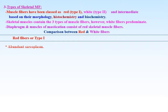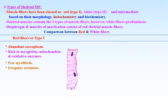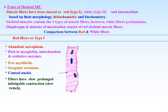Comparison between red and white fibers: red fibers or type 1 have abundant sarcoplasm rich in myoglobin, mitochondria, and oxidative enzymes. The cytoplasm shows few myofibers and irregular striations. The nuclei are central in position.